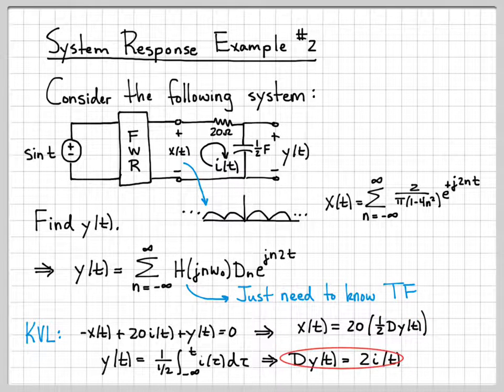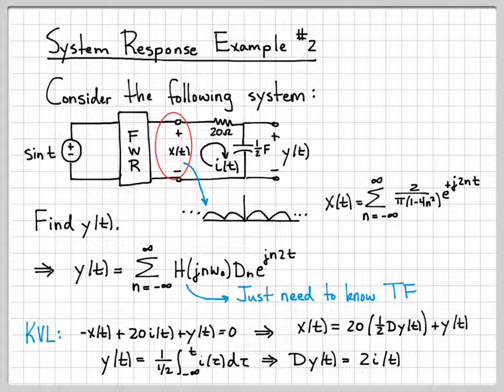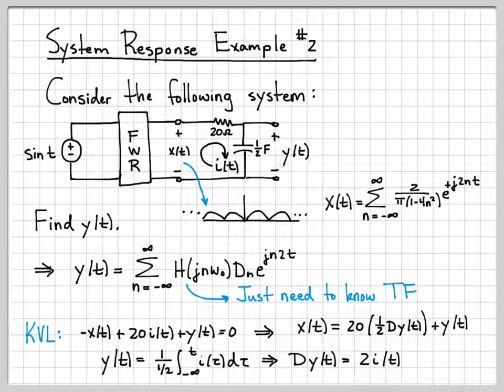And I can write x(t) = 20·(1/2)·Dy(t). So I've just used this relationship to get rid of the I(t) + y(t). So now I have a differential equation that describes the input x(t) and the output y(t).